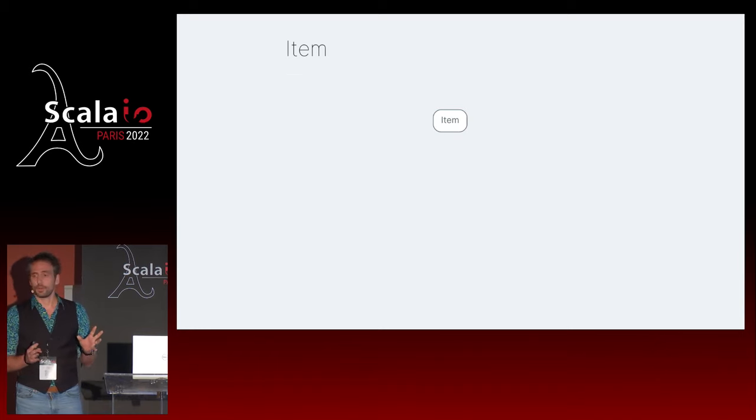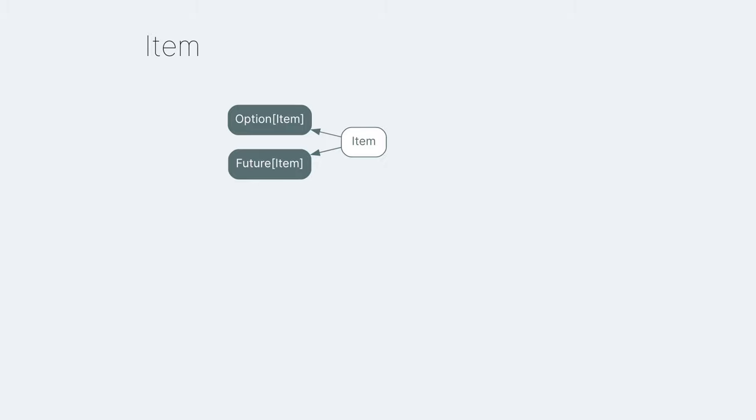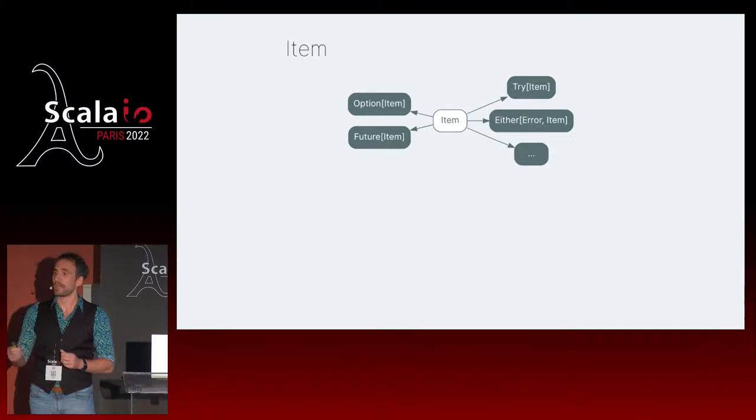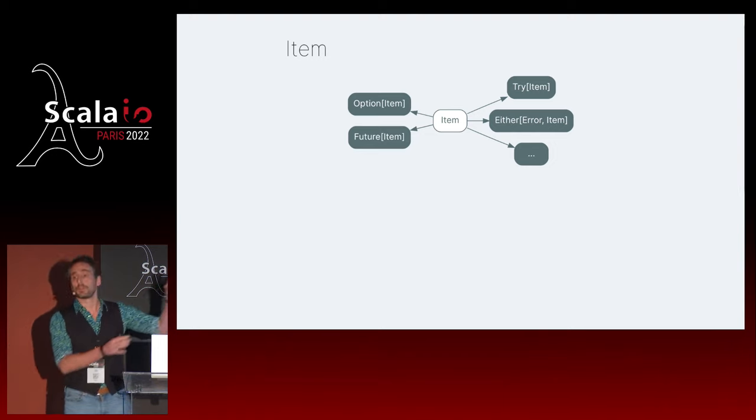An item is defined by its identifier, its name, its price, and the identifier of its seller. That would be the heart of the platform. But depending on where you find yourself in the platform, you might not have an item but say an Option of item - because you might be looking up the item in the database and there might not be any match. Or a Future of item, a Try of item, or an Either of item, which is just a pretentious Try, or any other context or combination of contexts.